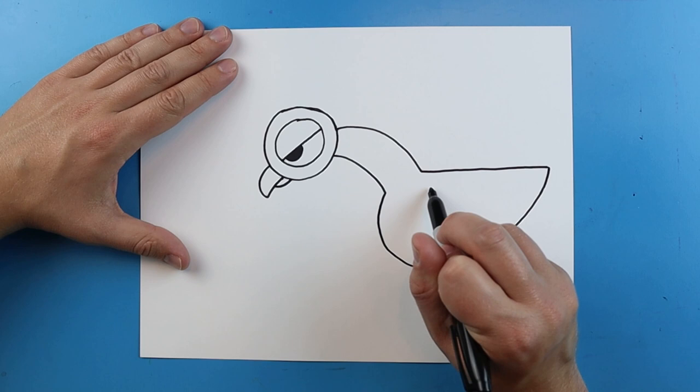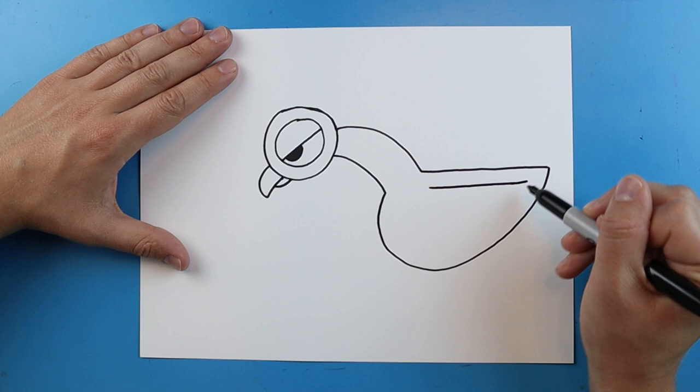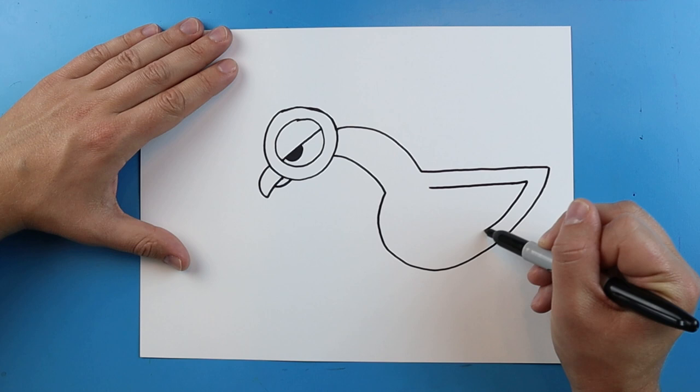Then right here I'm going to draw a line that goes straight across. And then you want to draw a line that's going to curve down to here, so just start here and I'm just going to curve down.